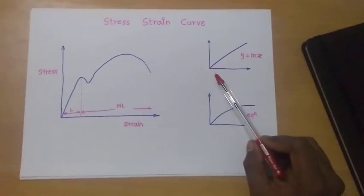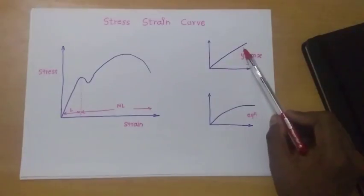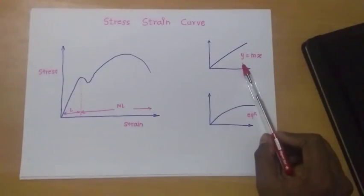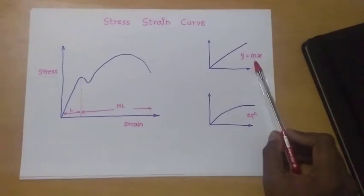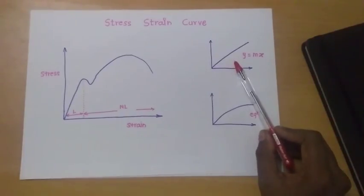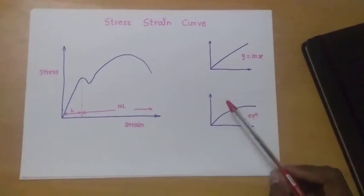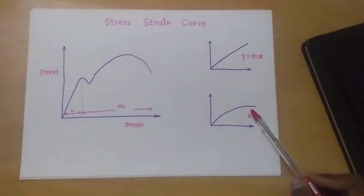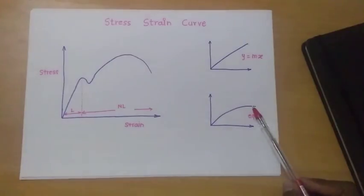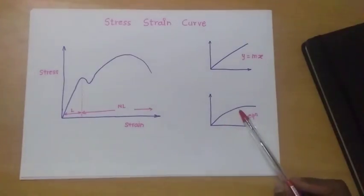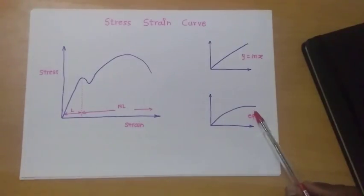Linear means a line following the equation y = mx, where m is the slope of that line — that is a linear graph. In the case of nonlinear, there is a different equation followed by the curve, and that curve is called nonlinear.